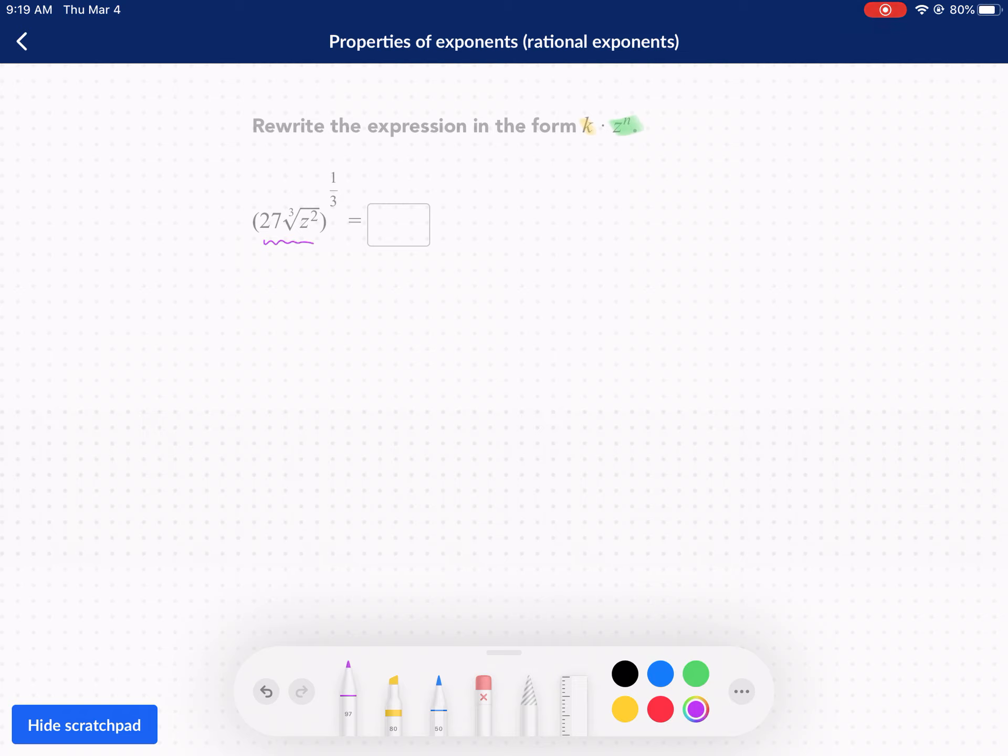We have this whole thing in parentheses raised to the one-third power. Now what I would do here is recognize something. I would rewrite that first. Now, what you know about rational exponents is gonna significantly help you.